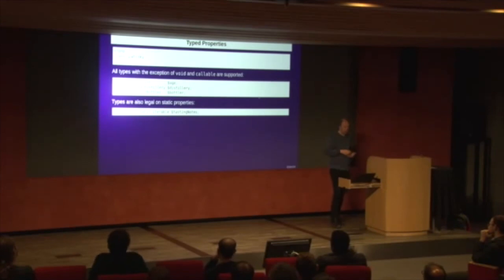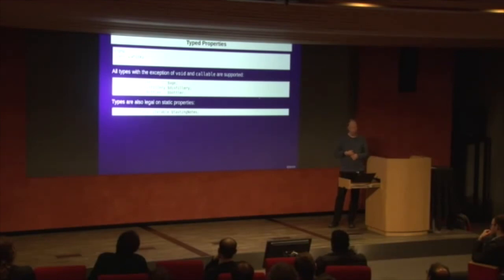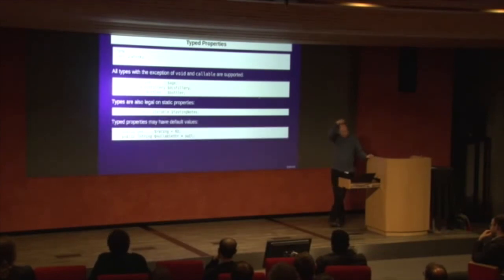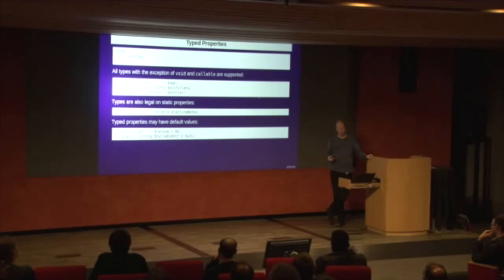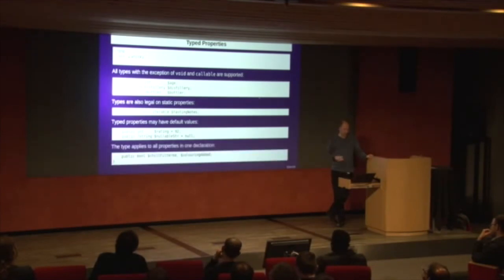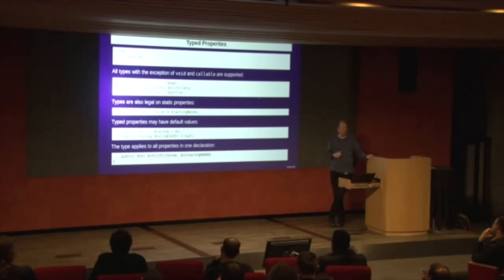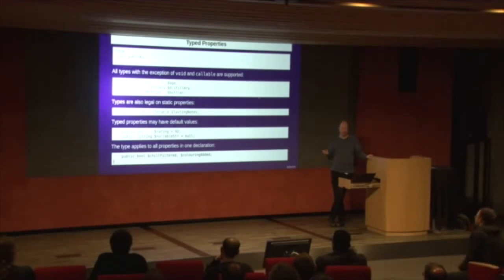You can also set types on static properties. I haven't actually tried whether the type needs to be after static or whether it comes before, so there's something for you to try as homework. Typed properties may have default values, but those can only be scalar values — they can't be instantiated objects because that's initialization you do in your constructor. If you want to apply a type to multiple properties you can use that syntax in PHP, but please don't do that because it's confusing — you can't tell if the bool applies to both or one of them.